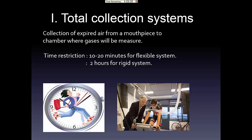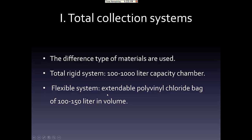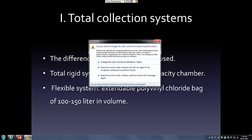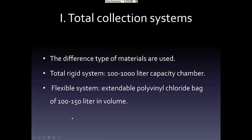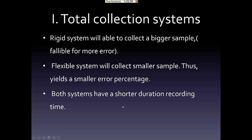Both approaches involve a patient's expired air directed to a mouthpiece, and the gas is collected in a chamber and measured. One disadvantage of these two approaches is time restriction. Different materials are also used — the rigid system uses a hundred to a thousand liters capacity, while the flexible system uses an extendable polyvinyl chloride bag with a smaller volume. The rigid system allows collection of a bigger sample, while the flexible system collects less.